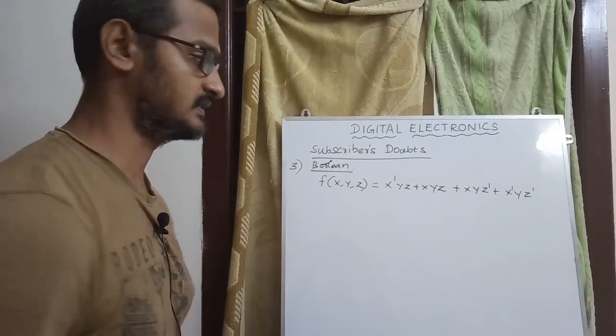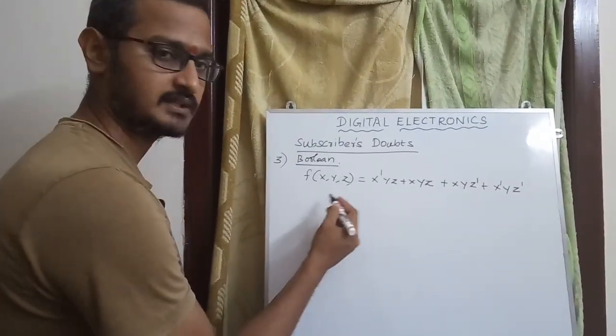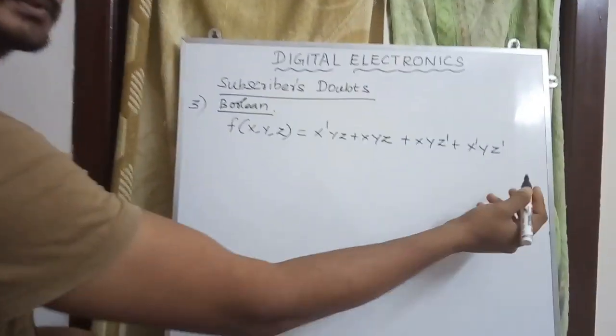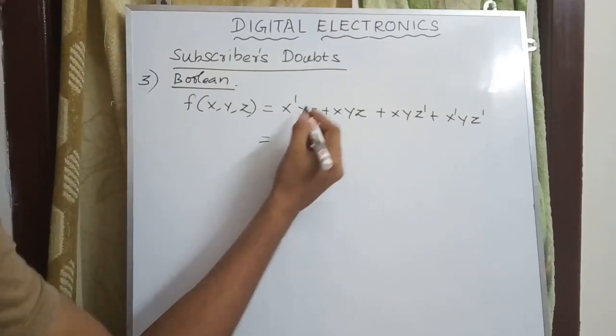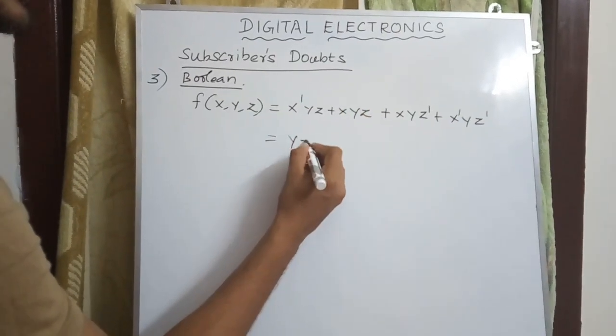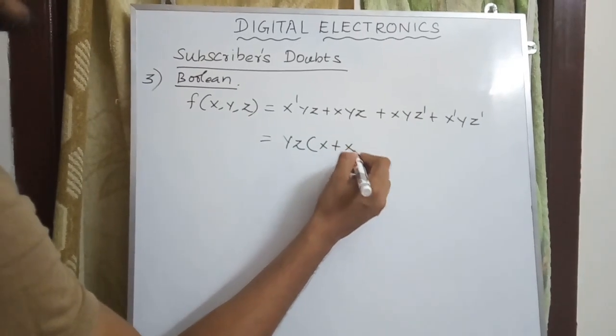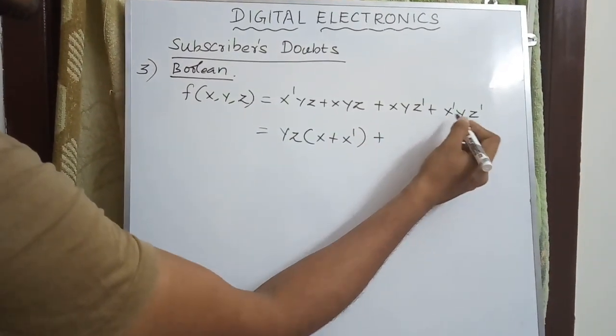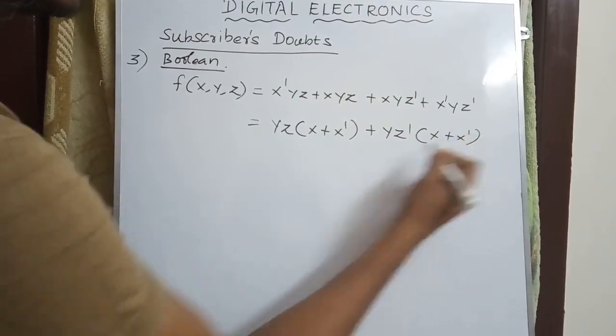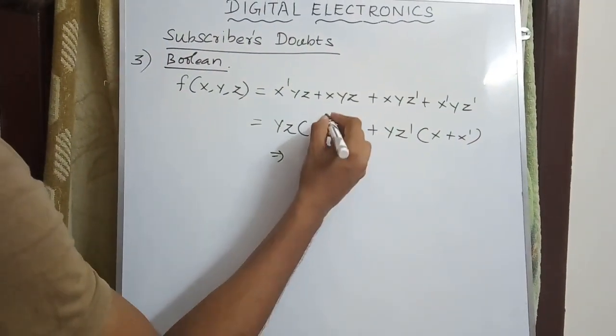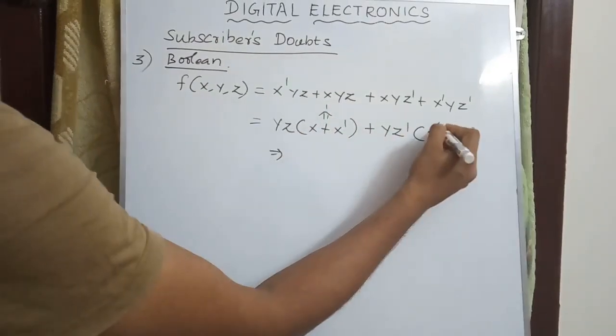For the equation taking x, y, z, we'll reduce using Boolean algebra. We look for common terms. We have x plus x', which equals one.